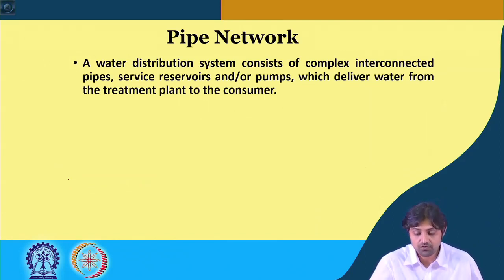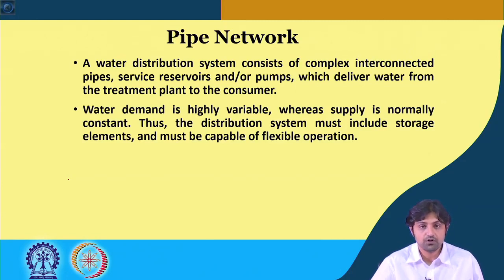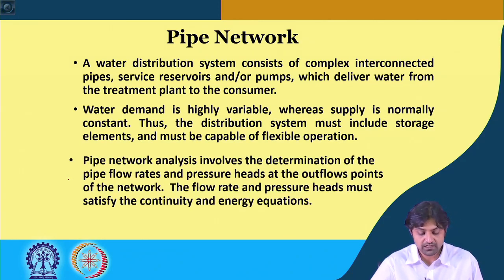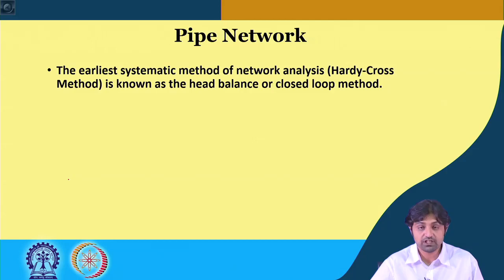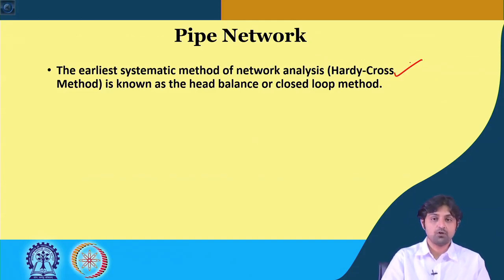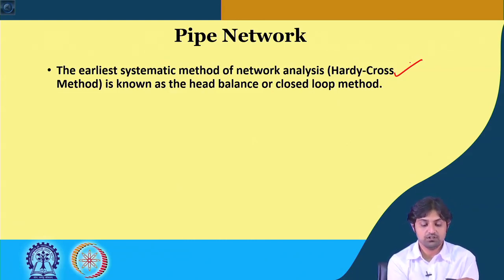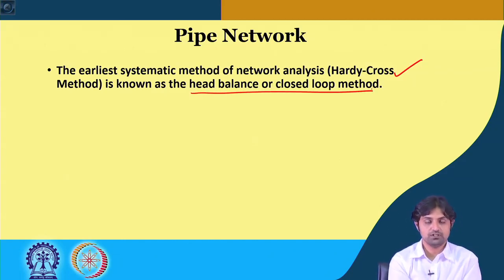A water distribution system consists of complex interconnected pipes, service reservoirs, and pumps that deliver water from the treatment plant to the consumer. Water demand is highly variable while supply is normally constant, so the system must include storage and be capable of flexible operation. Pipe network analysis involves determining pipe flow rates and pressure heads at outflow points, satisfying both continuity and energy equations. The earliest systematic method is called the Hardy Cross method, also known as the head-balanced or closed loop method.